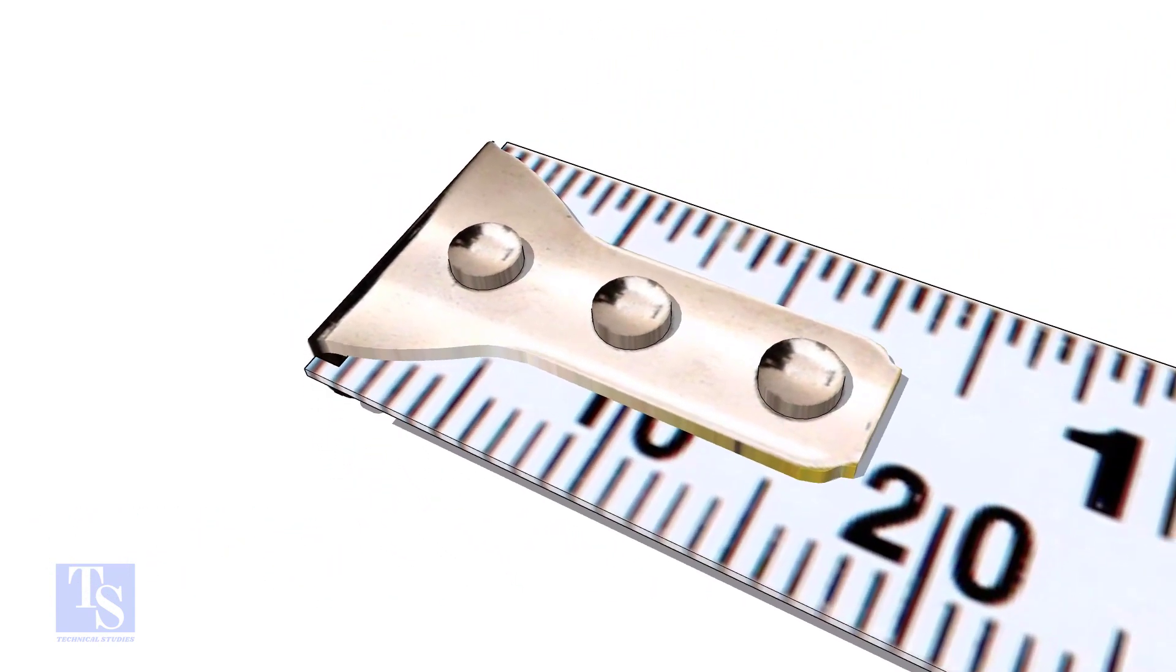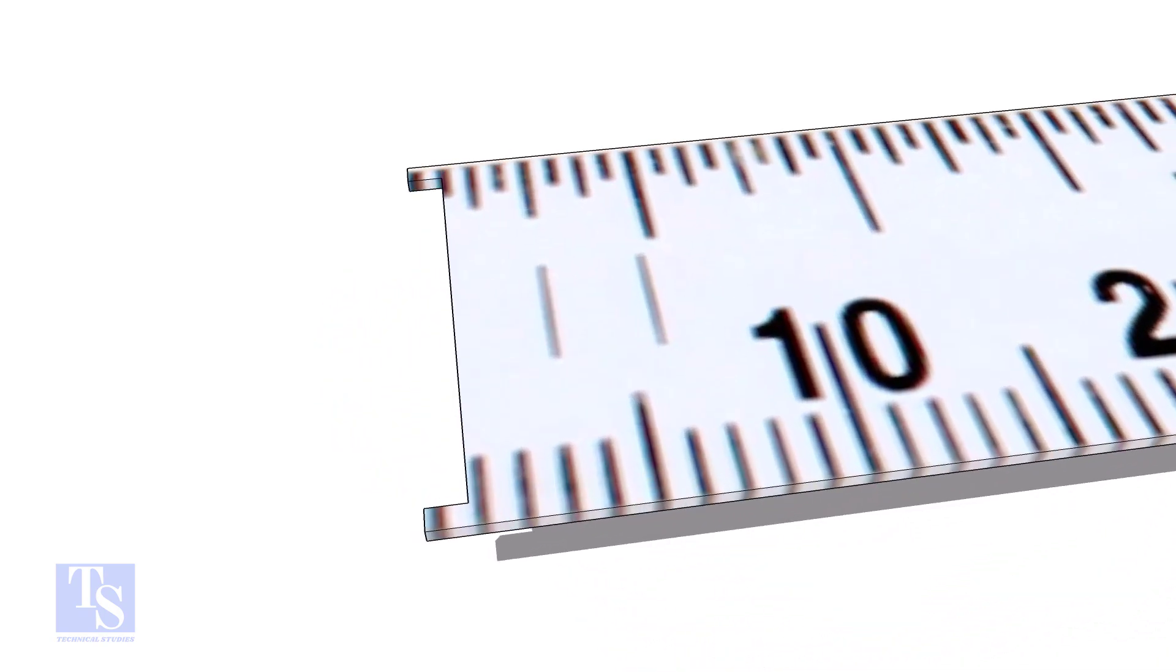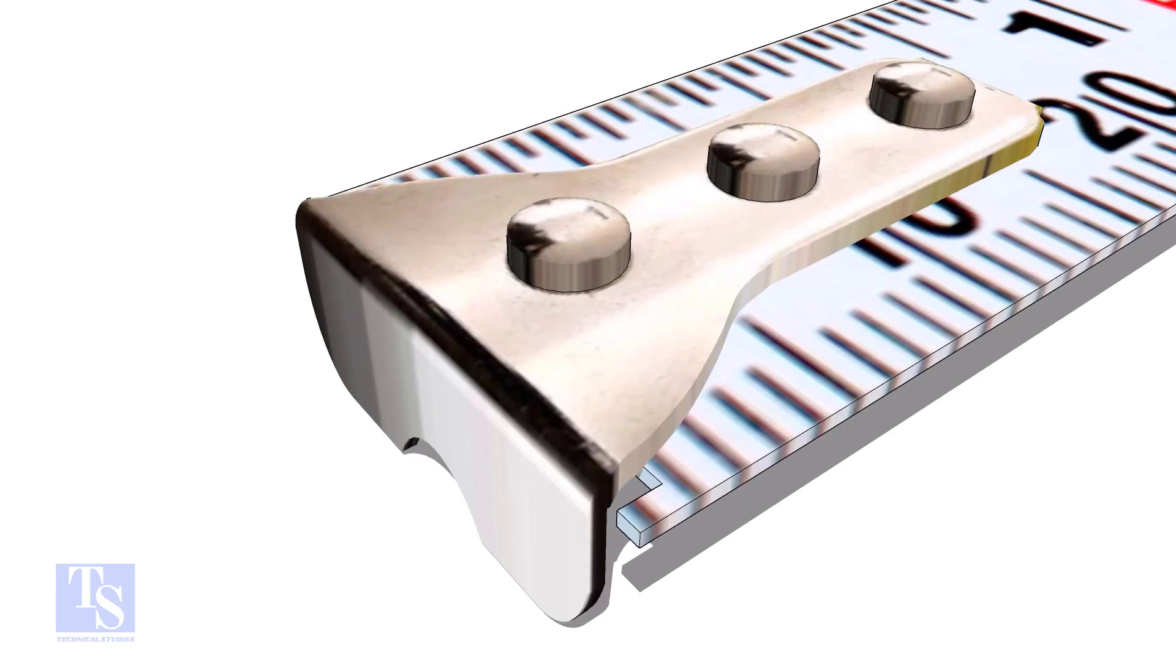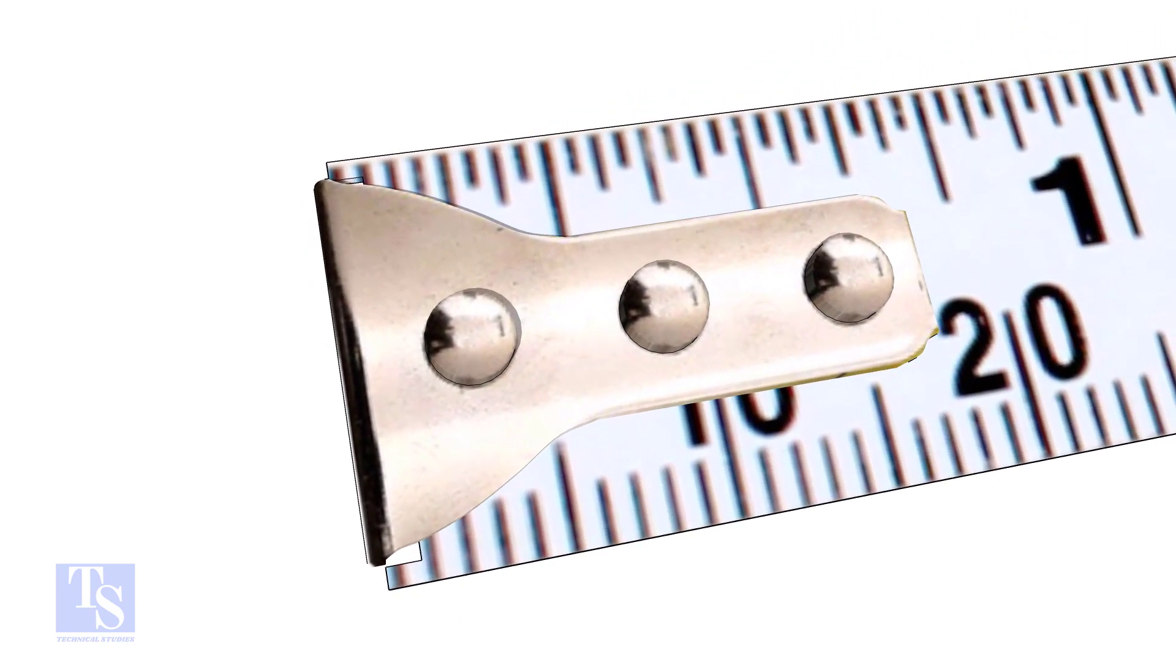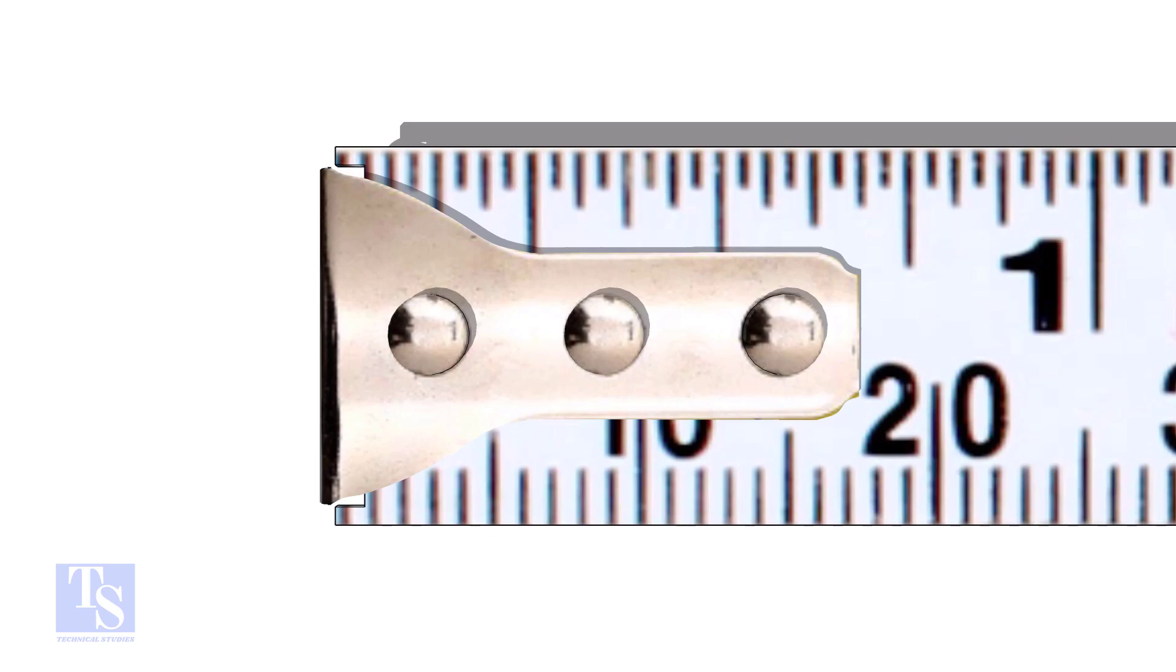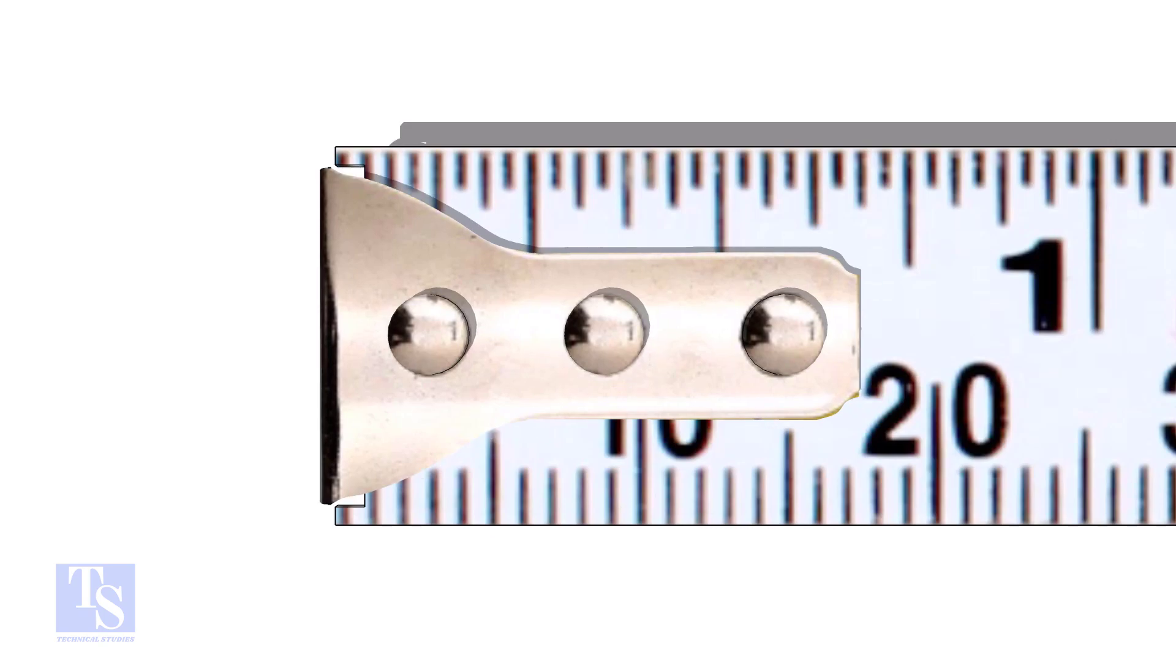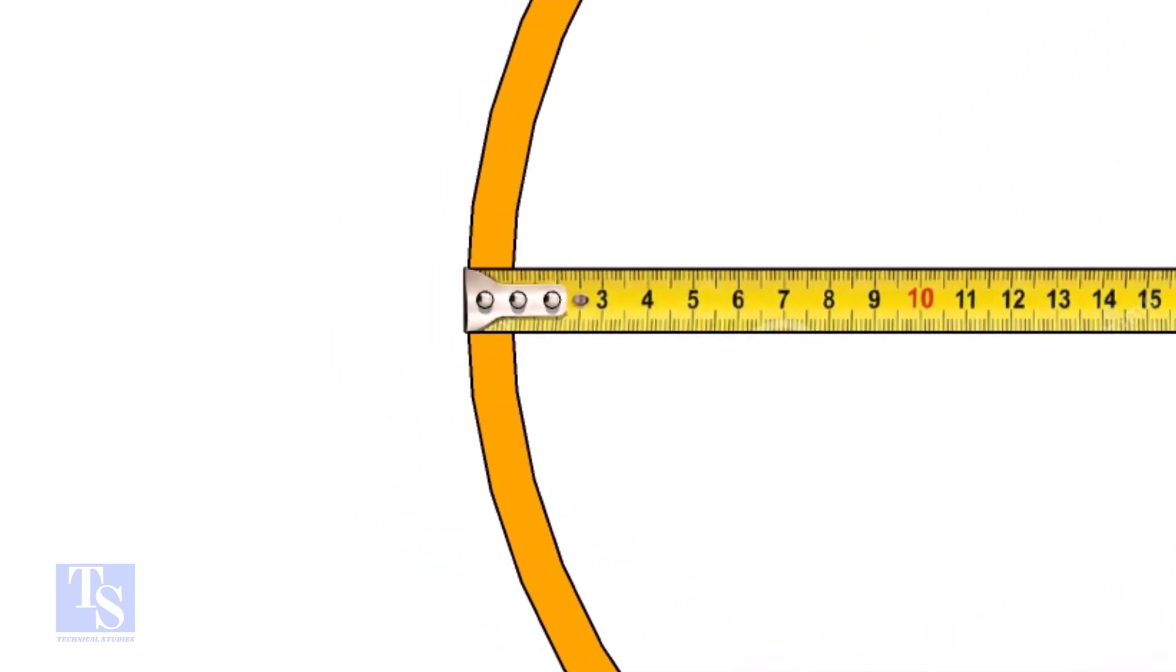I am sure all of you have noticed there is a small play between a measurement tape and its hook. Do you know why this play is given? When you measure an outer dimension, the hook will move outwards, and in case of an internal dimension checking, the hook will move inwards, and the accuracy of the tape will be maintained.